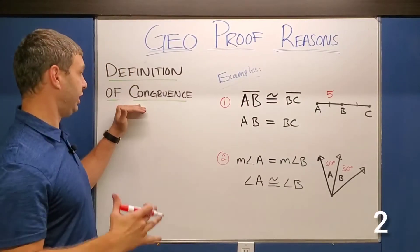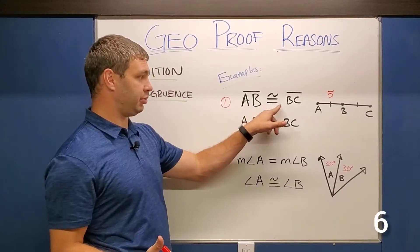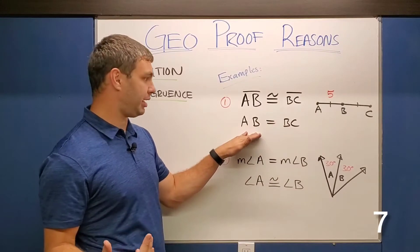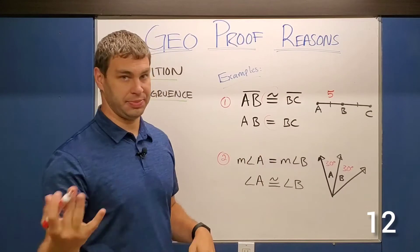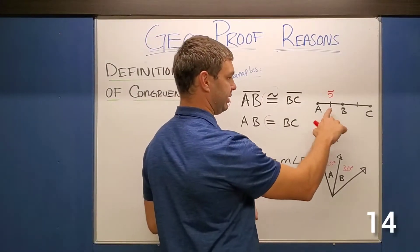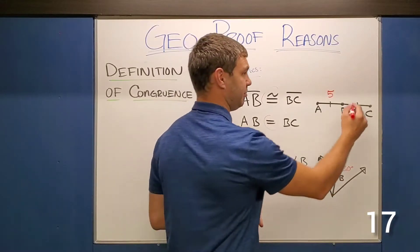Starting off with a quick definition of the definition of congruence. It says that AB can be congruent to BC and then that implies that AB equals BC. So the difference is our sign here in the middle. Practically what this is saying is that if AB is 5 and we know that AB is congruent to BC, BC is also 5.